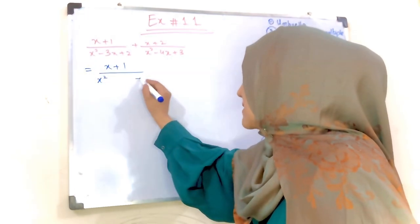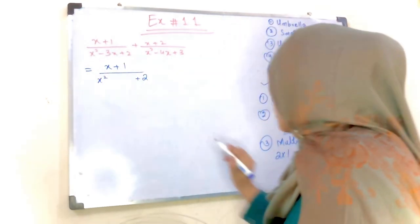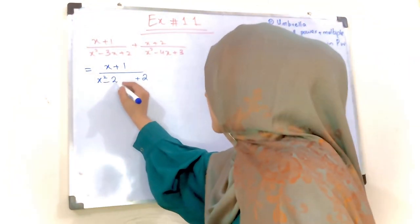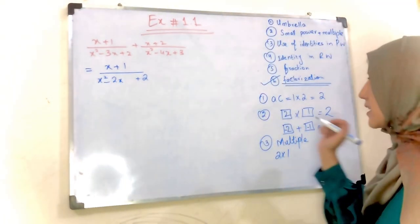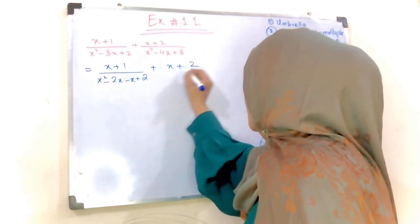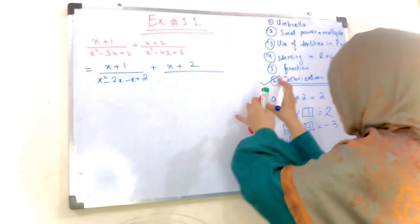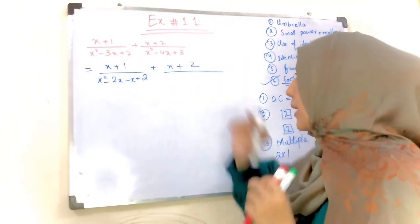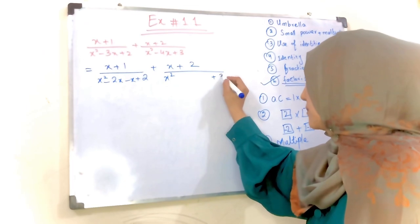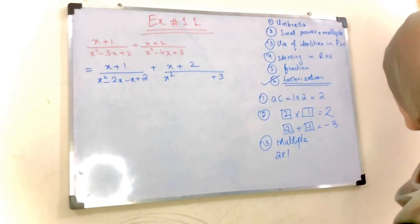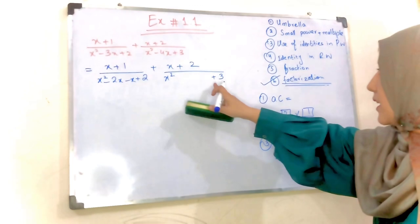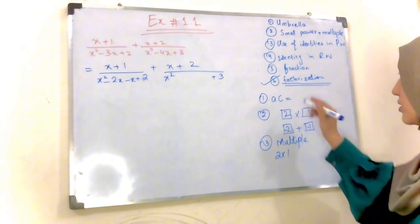Now I am going to break the mid-term: first term as it is, last term as it is — toh mid-term ko kaise likhenge: minus 2x minus x. Same procedure, same follow-up yahan bhi karna hai — first term as it is aur last term as it is, humane paas multiply karayi toh 3 aaye.